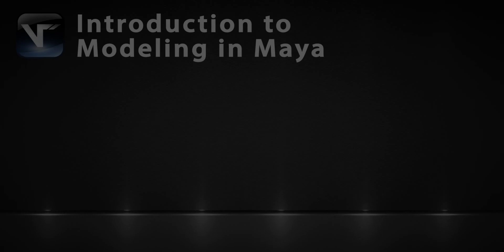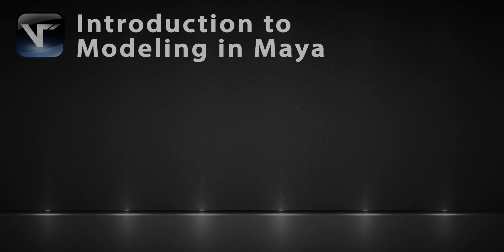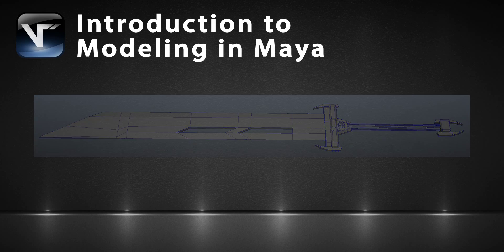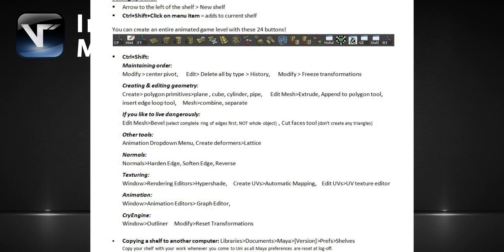Hi, I'm Ben Shelley and in this tutorial we will focus on creating a simple piece of geometry using tools that will eventually allow you to create things that are far more advanced. You should already have an understanding of the Maya interface and controls before proceeding with this video. If not, check out my introduction to Maya's interface and controls tutorial. We will be using tools from the 24-button shelf — details on how to create it are in the controls and shortcut document listed below this video. It would be a good idea to make sure that's set up before proceeding.